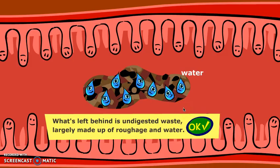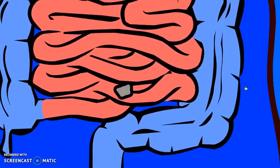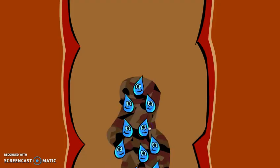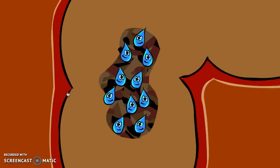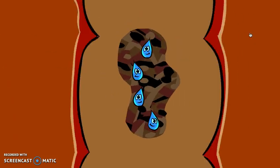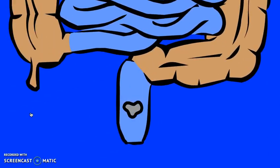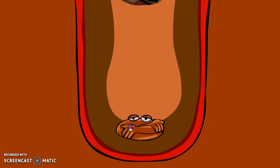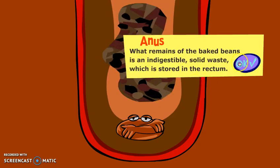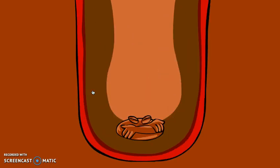What's left behind is the undigested waste, which is largely fiber and some water molecules. This passes into the colon or the large intestine. Most of the water is reabsorbed into the bloodstream to be excreted as urine, with water molecules passing through the walls of the colon. The remainder of the waste passes into the rectum and then the anus to be expelled from the body as feces. What remains is stored in the rectum and expelled through the anus.